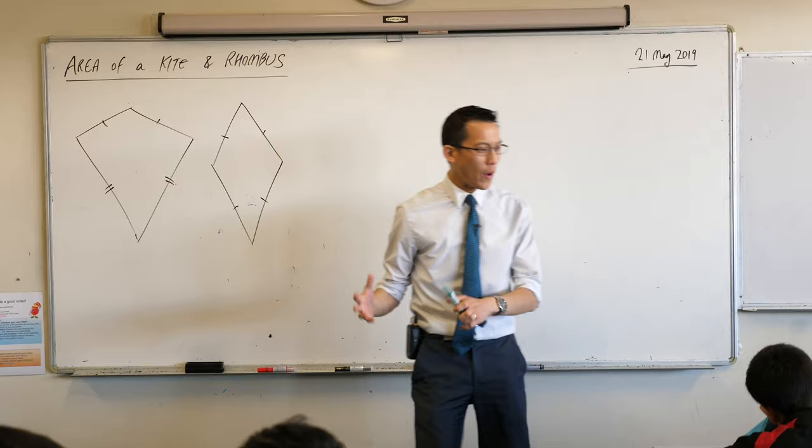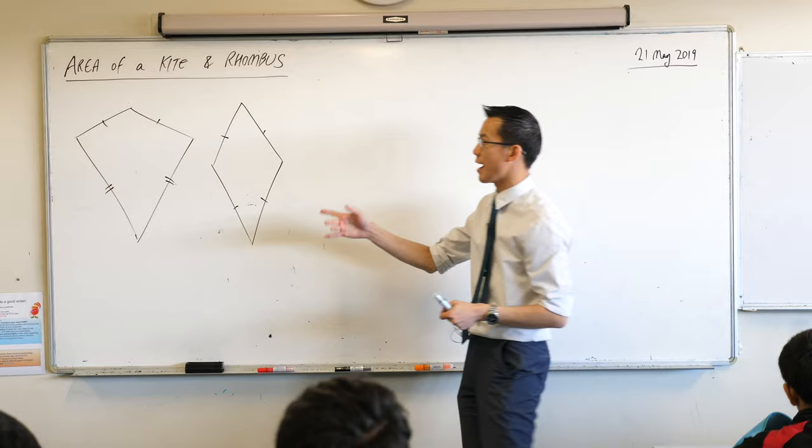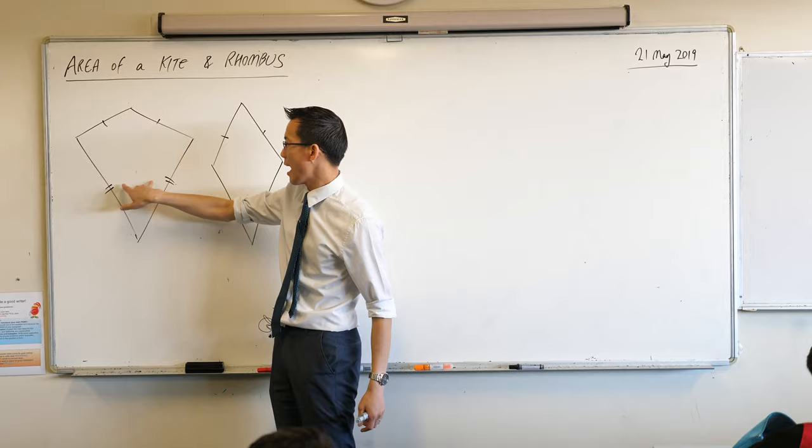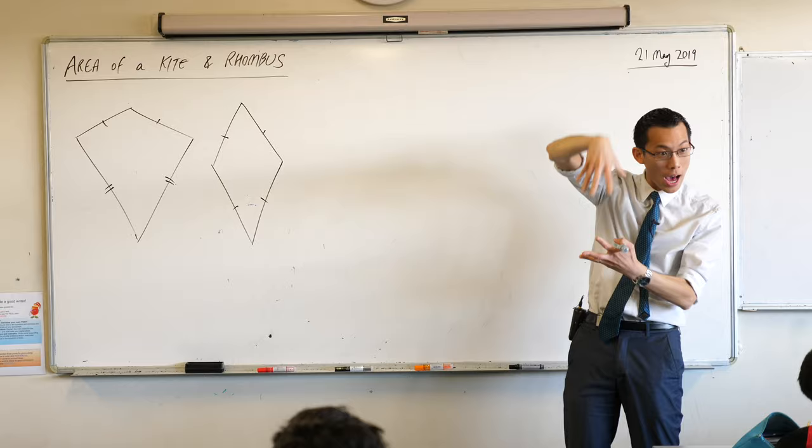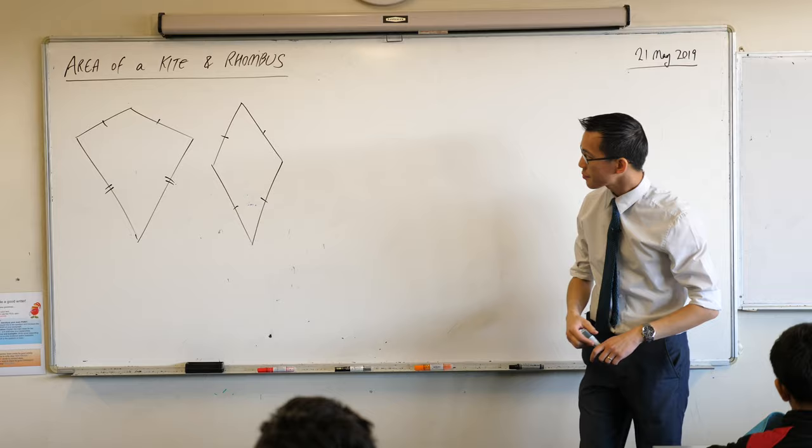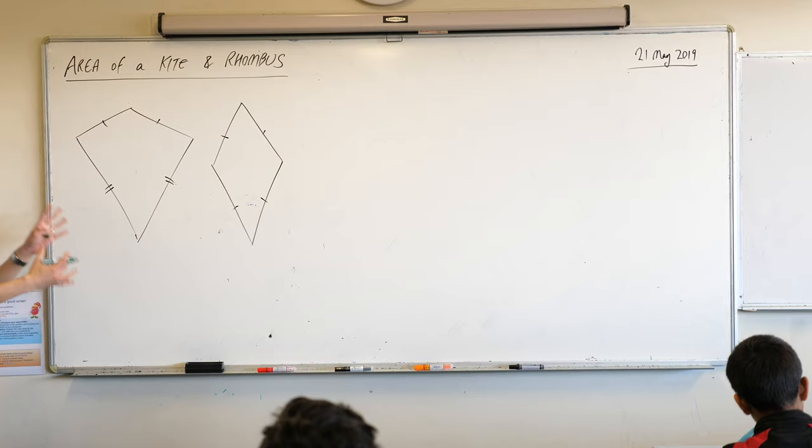So when you take a kite or a rhombus, just draw it up. Remember, the key feature of a kite is that you've got these two sides being the same, adjacent sides being equal and linked, and these two also being equal. If you took those two pairs and made them equal to each other, then you'd end up with a rhombus. All four sides are equal in length. What I'd like us to do is to draw the diagonals of these two shapes.